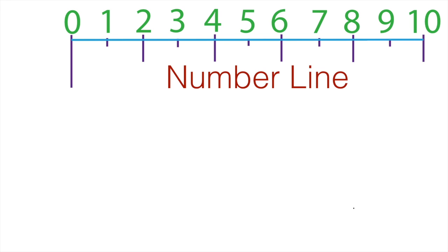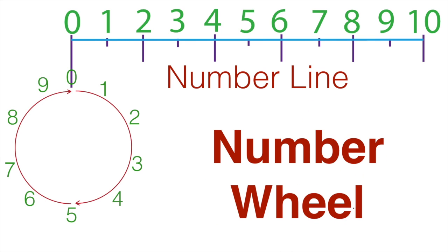Number wheels are a number line of 10 wrapped in a circle, so that 0 and 10 are on top and 5 is on the bottom. They're a fun, unique, effective approach to numbers.